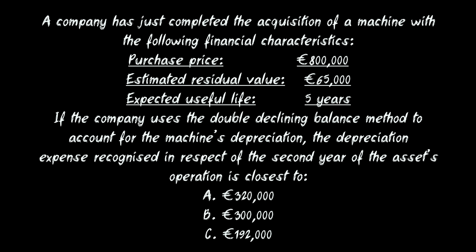If the company uses the double declining balance method to account for the machine's depreciation, the depreciation expense recognized in respect of the second year of the asset's operation is closest to: A. €320,000, B. €300,000, or C. €192,000.